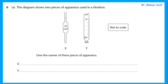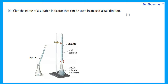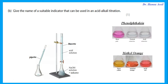Question 6 is about titration apparatus. Piece X is a pipette — be careful with spelling. Piece Y, which has a tap and graduations, is a burette; if it were without graduations it would be a dropping filler. A suitable indicator for an acid-alkali titration is phenolphthalein or methyl orange — again, be careful with spelling.